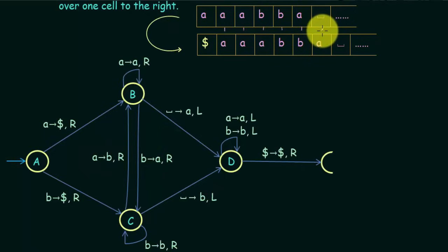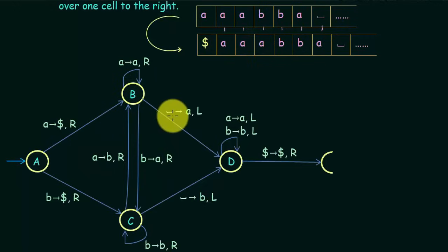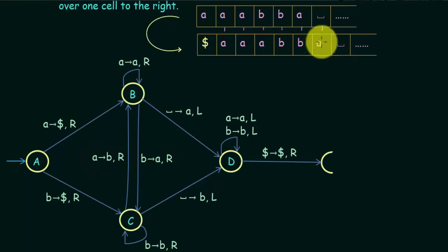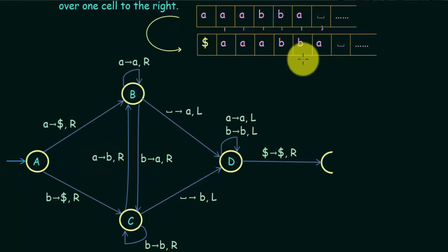When we are in state B and encounter a blank symbol, replace that blank with an A and move one step to the left. This writes the last carried symbol into the blank cell at the end of the tape.